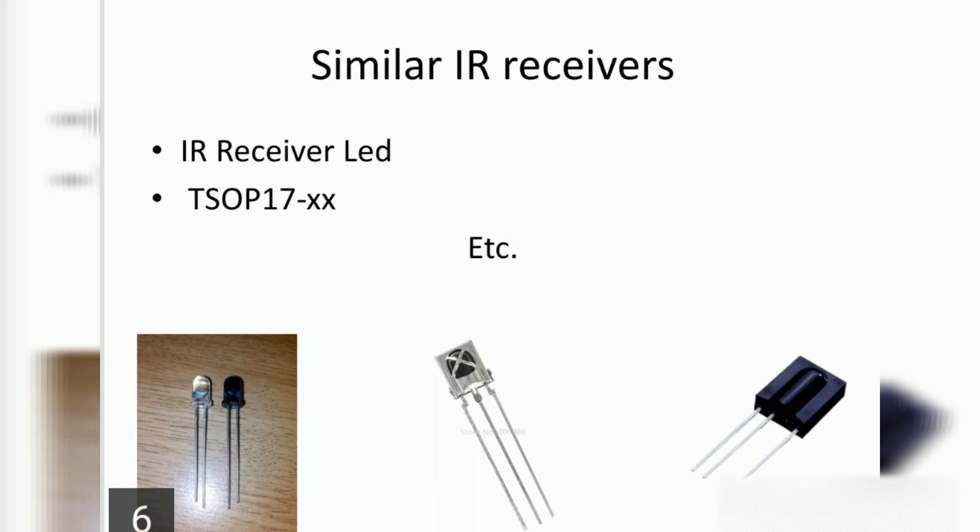Let us see TSOP 1838 similar IR receivers. First, IR receiver LED which is photodiode. Second, TSOP 17XX which is also called TSOP 1738 etc.